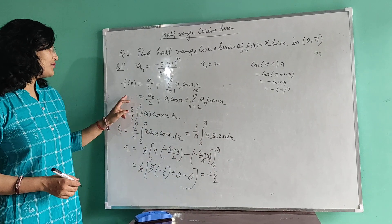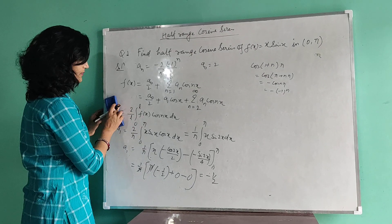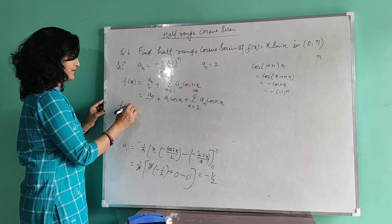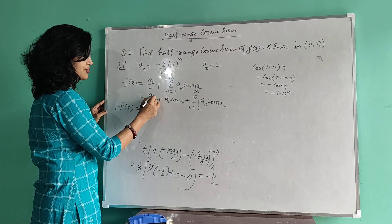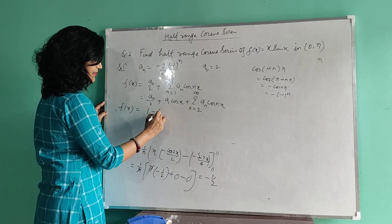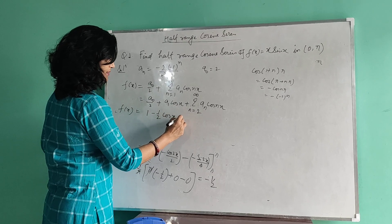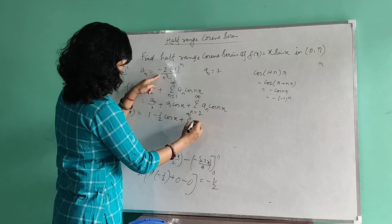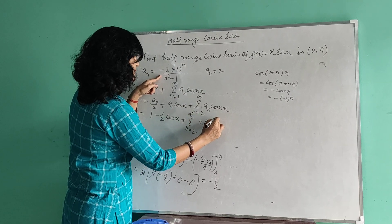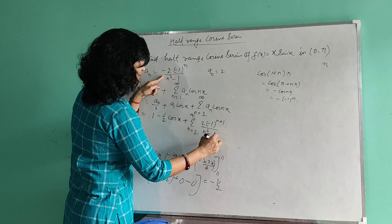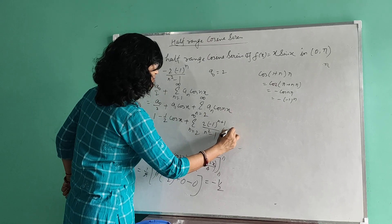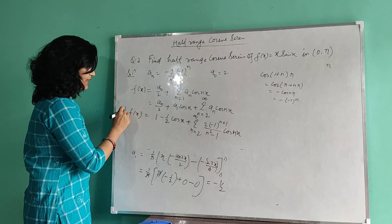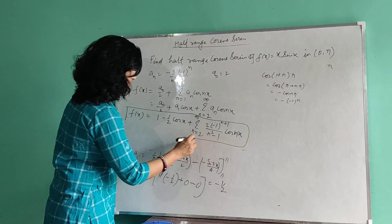The required half range cosine series is: f(x) = 1 + (−1/2)·cos(x) + Σ(n=2 to ∞) [−2(−1)ⁿ/(n²−1)]·cos(nx), where a₀/2 = 1, a₁ = −1/2, and aₙ = −2(−1)ⁿ/(n²−1) for n ≥ 2.